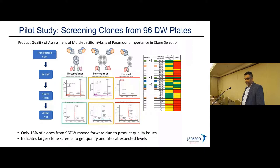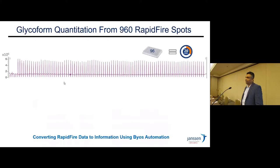Here is a case study looking at 96 deep-well plates for product quality. The table on the right shows that the highest-producing titer clones — only 13% of them — moved forward due to product quality issues. So we cannot consider titer alone; we must look at these product quality issues early on.